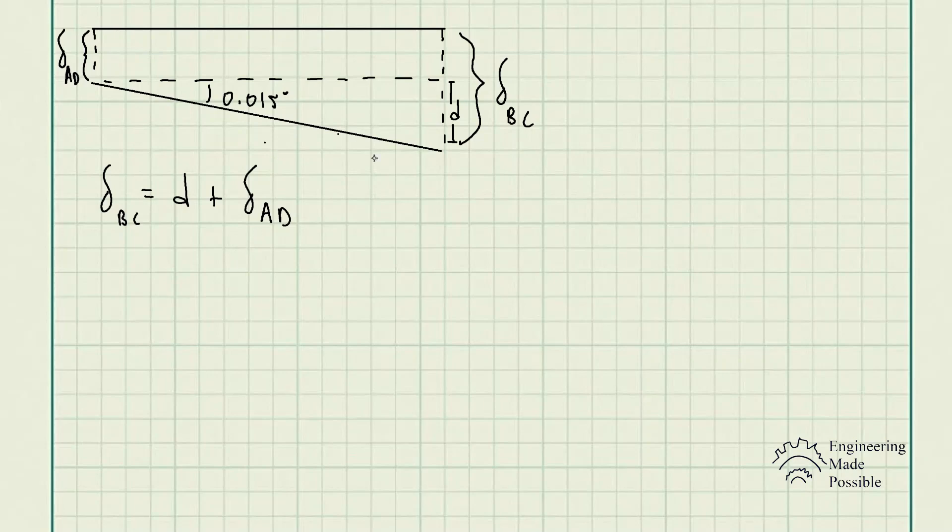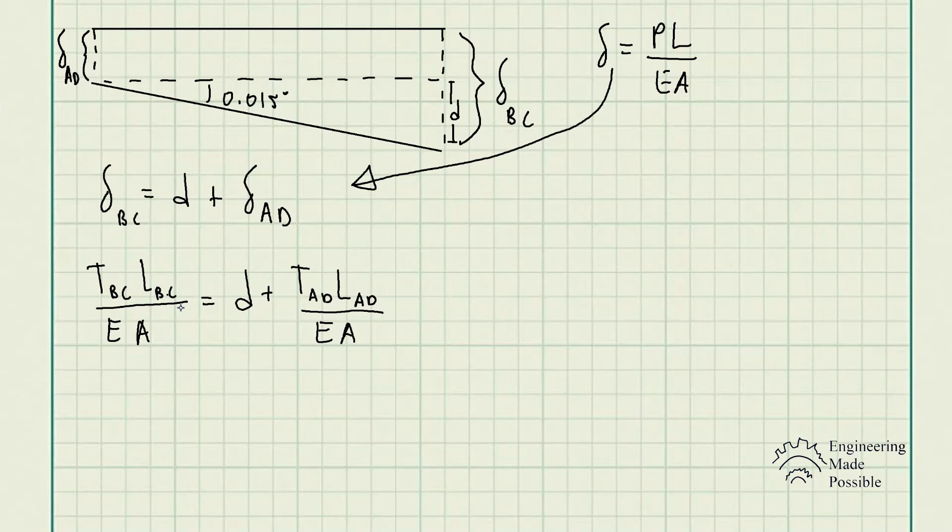Knowing that the equations for the deformation is equal to PL divided by EA, we go ahead and replace the deltas with this equation. We have the tension in cable BC times the length of BC divided by EA. They're both the same for both of the cables, so I didn't put any subscript here.